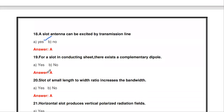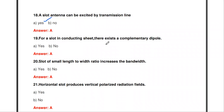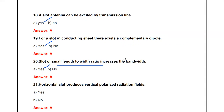For a slot in a conducting sheet, there exists a complementary dipole — correct. A slot of small length-to-width ratio increases the bandwidth — also correct. Depending upon the length-to-width ratio, the bandwidth varies.